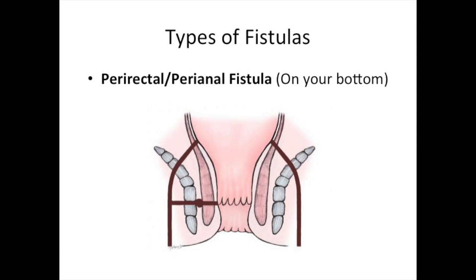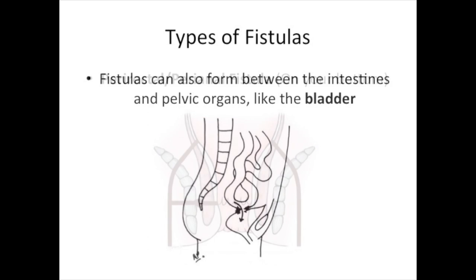One very common and problematic fistula is the perirectal fistula, which is actually a type of enterocutaneous fistula. They can also form between the intestines and any pelvic organ, such as the bladder.